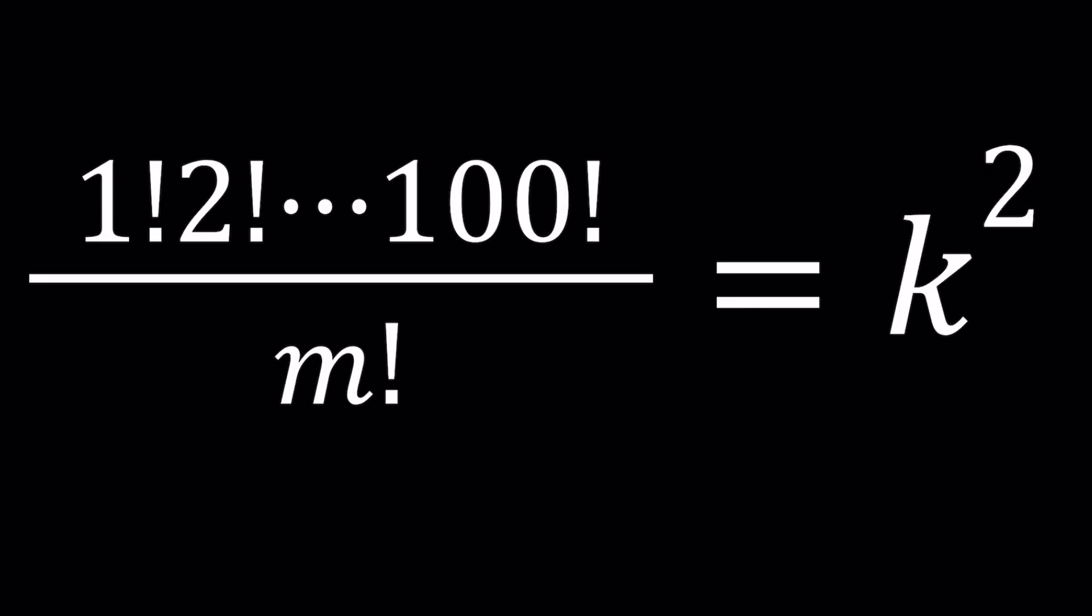Hello, everyone. In this video, we're going to be solving a really nice Diophantine equation with factorials. We have 1 factorial times 2 factorial times 3 factorial all the way up to and including 100 factorial, that huge product, divided by m factorial, and that is equal to k squared. m and k are positive integers, and we're going to be solving for them. That's why this is called a Diophantine equation.